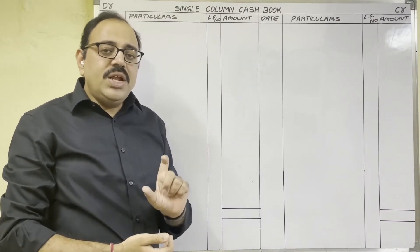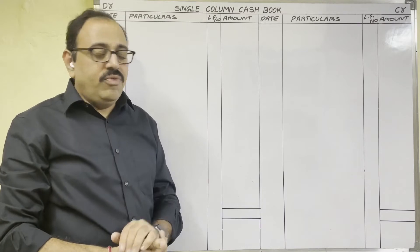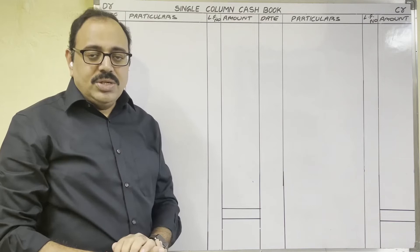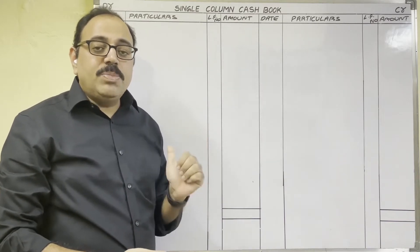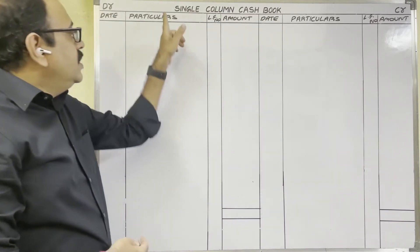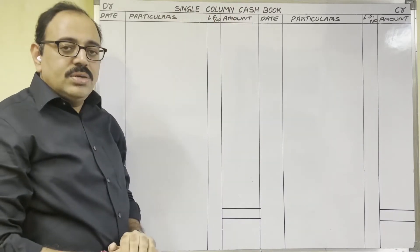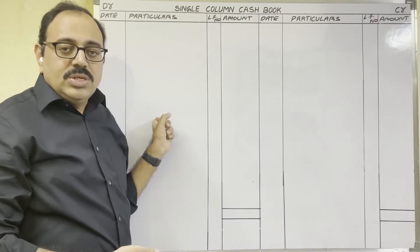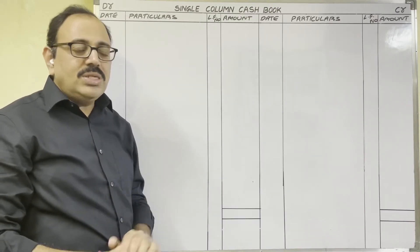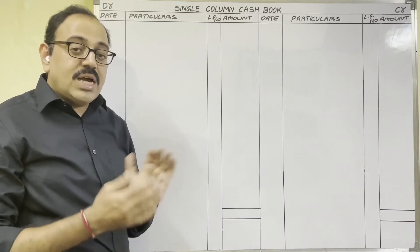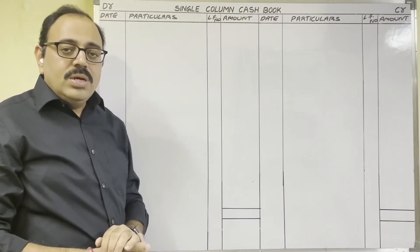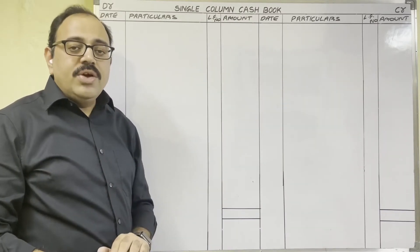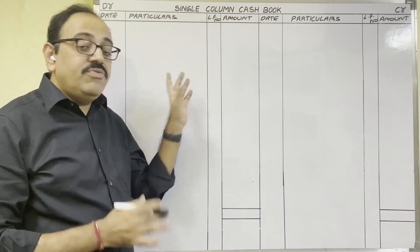The first method uses journal entries for each transaction to prepare the single column cash book. The second method is the shortcut method. In this video I am going to explain the shortcut method. Here we are preparing a cash book, which is nothing but a cash account. Cash account is a real account because cash is an asset, and assets come under real accounts. The rule is: debit what comes in, credit what goes out.